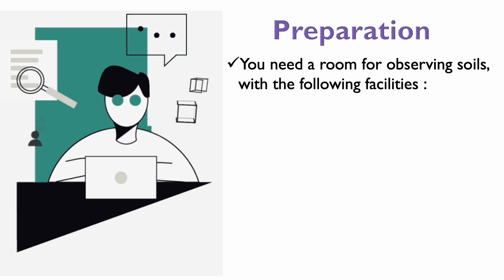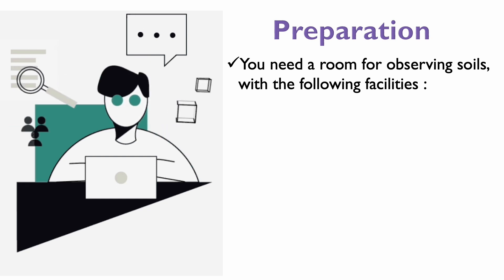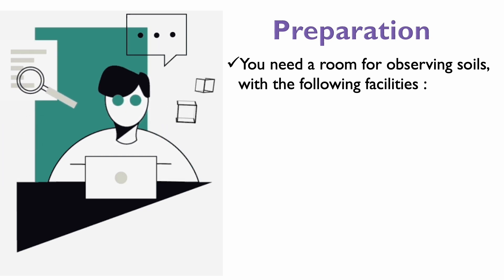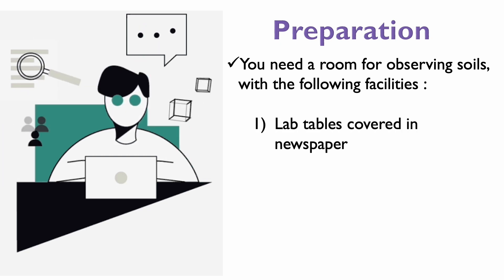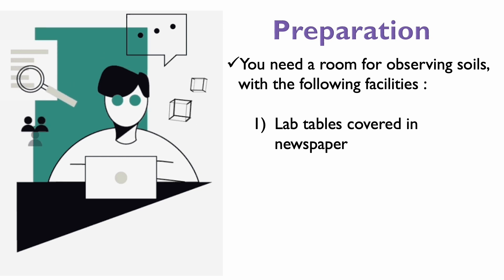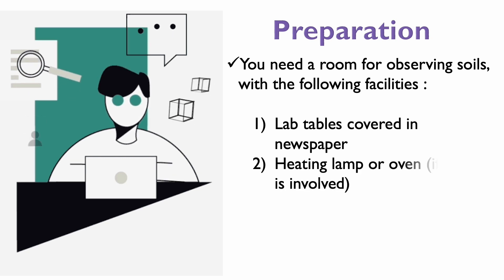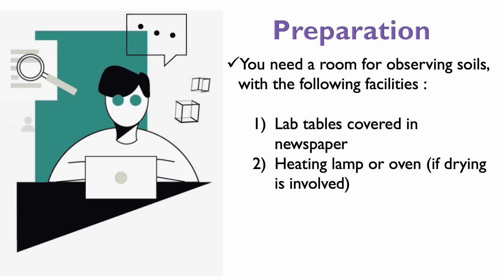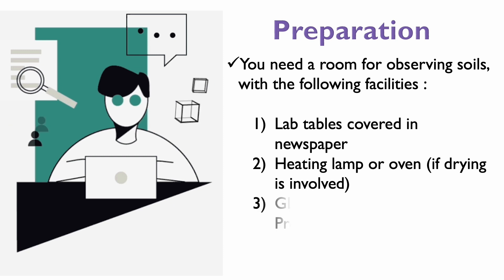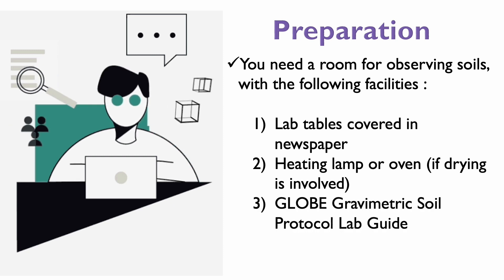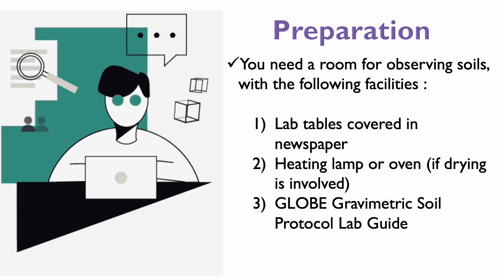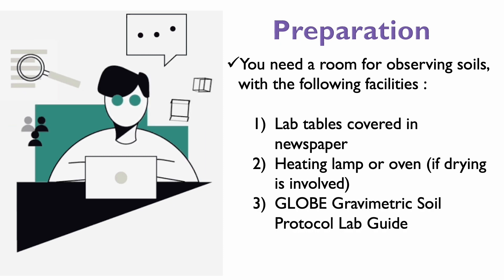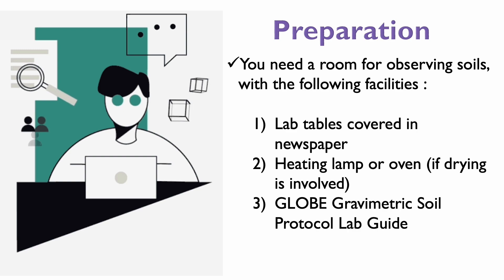You need a room for observing soils with the following facilities: lab tables covered in newspaper, a heating lamp or oven if soil drying is involved, and the GLOBE Program's gravimetric soil protocol lab guide.